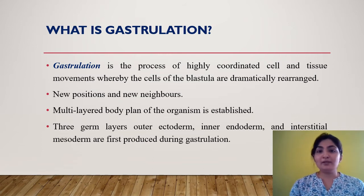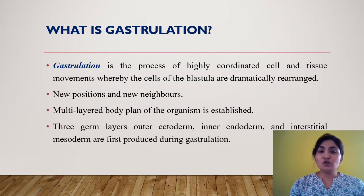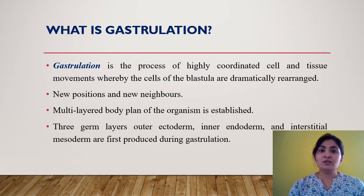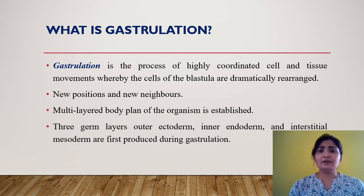In the case of triploblasts, the germ layers are ectoderm, mesoderm, and endoderm, whereas in diploblasts there are only two germ layers: ectoderm and endoderm. After gastrulation, the next step is organogenesis, so each germ layer will form a specific organ. There will be a division of labor between these layers — for example, ectoderm will form epidermal and nervous tissue, mesoderm will form blood and other tissues, and endoderm will form the inner lining of the gut.